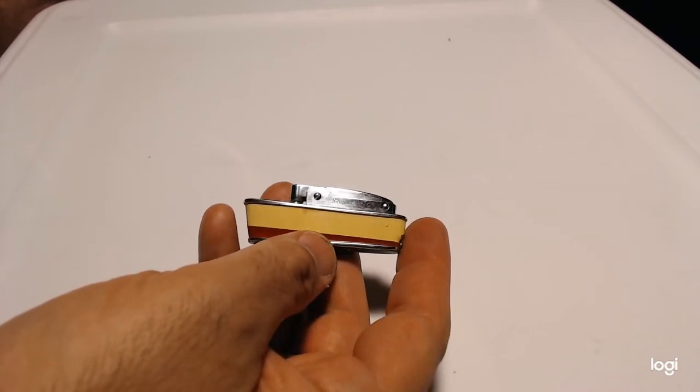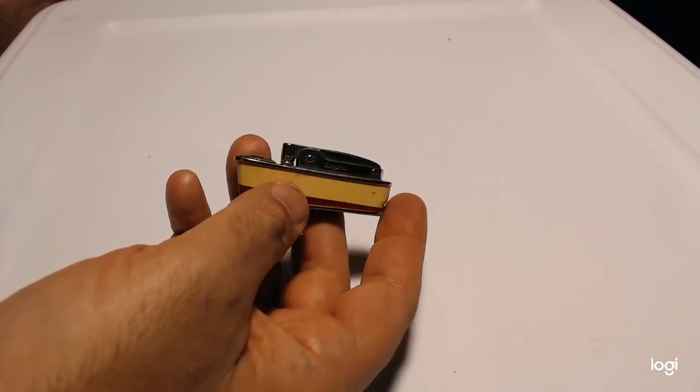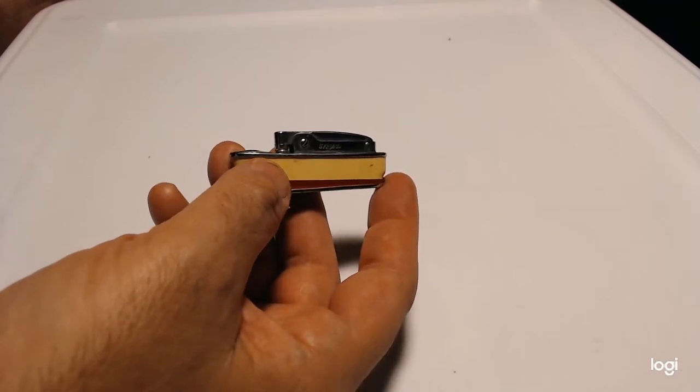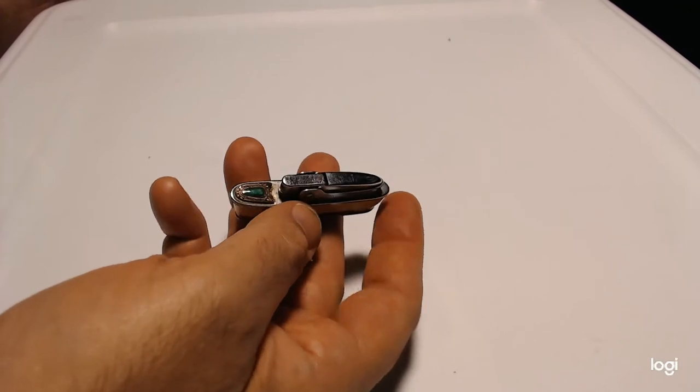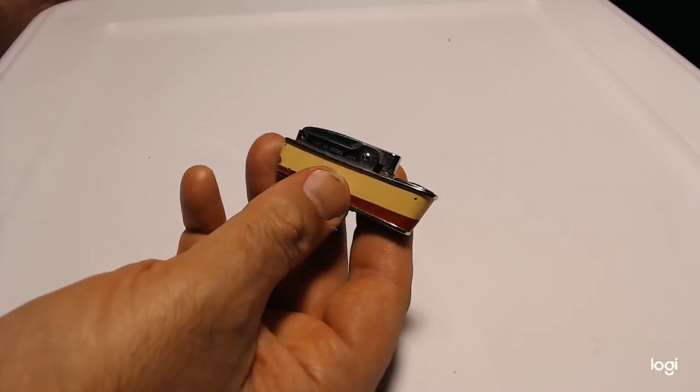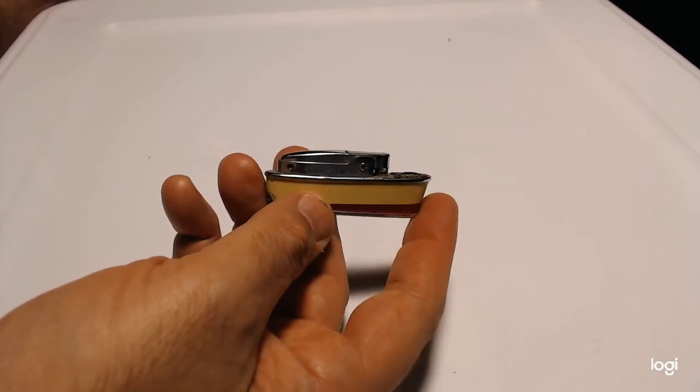So, this is a vintage lighter in the shape of a boat called a Sarome or Sarome cruiser. It's in pretty good shape. I think it's quite attractive.